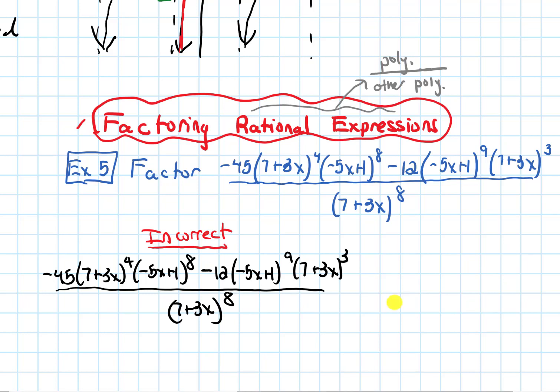So one thing that I cannot do, this is not gonna be true, I'm gonna slash through this equal sign, is to say, oh there's a 7+3x to a power here. There's a 7+3x to a power here on the bottom. Can't I just cancel them?